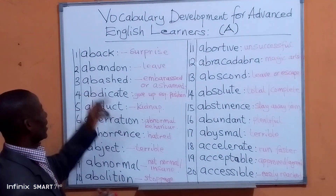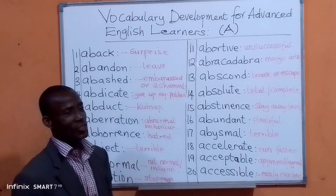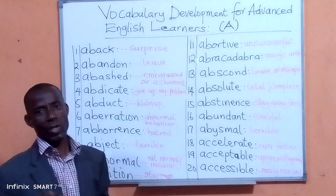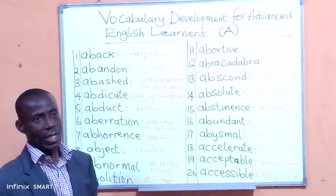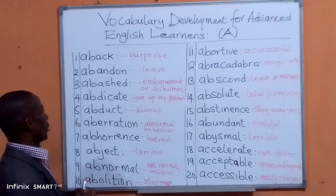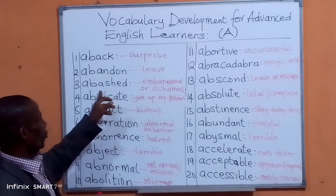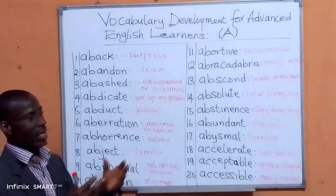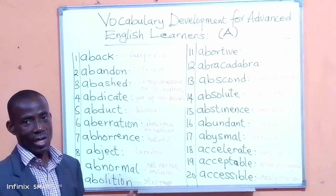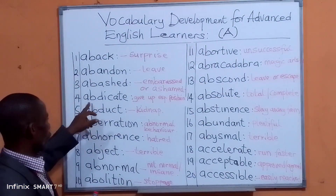Number three is 'abashed,' meaning embarrassed or ashamed — that is, for what you have done. You have done something that causes you to be embarrassed. For example: 'I was abashed when I saw my friend taking another person's property,' or you feel abashed for what you have done, or for what somebody else has done.